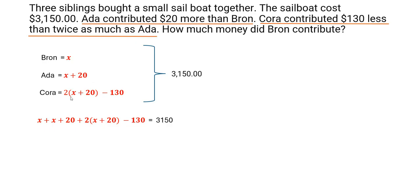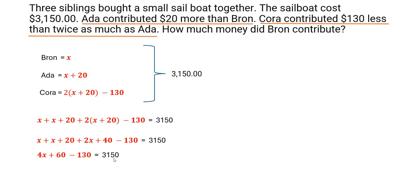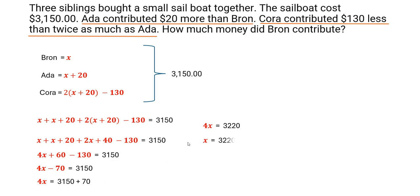So: x plus (x plus 20) plus 2(x plus 20) minus 130 equals 3150. We use the distributive method to open the brackets: 2 times x plus 2 times 20 gives 2x plus 40. Now we have x plus x plus 2x which gives 4x, and 20 plus 40 gives 60, minus 130, which equals 3150. 60 minus 130 is negative 70, so 4x minus 70 equals 3150. Bringing minus 70 to the right-hand side gives 4x equals 3150 plus 70, which equals 3220. Therefore x equals 3220 divided by 4, which equals 805.